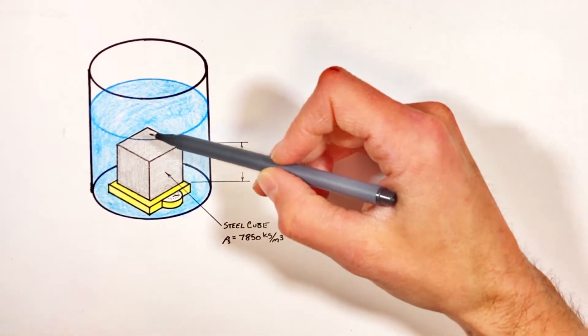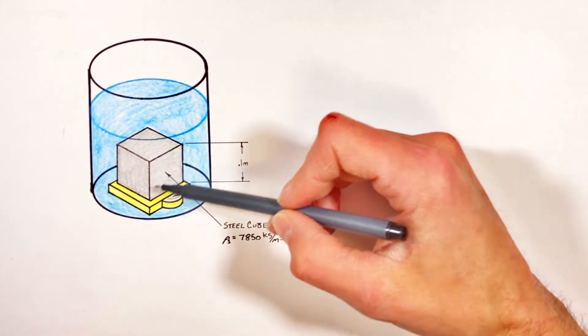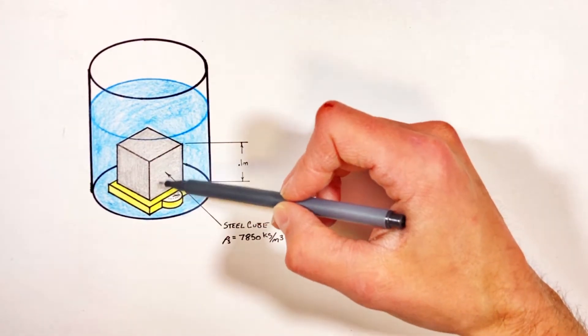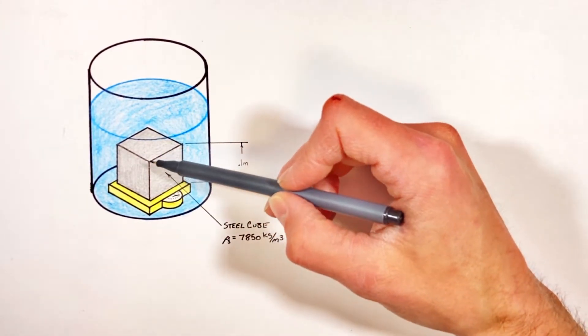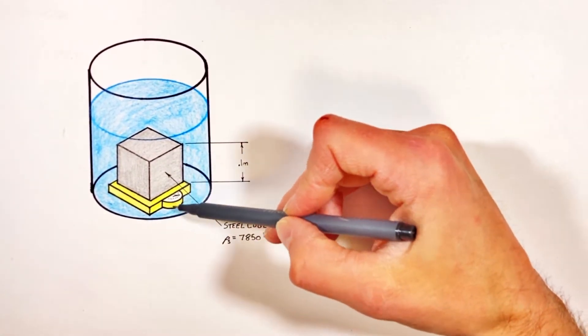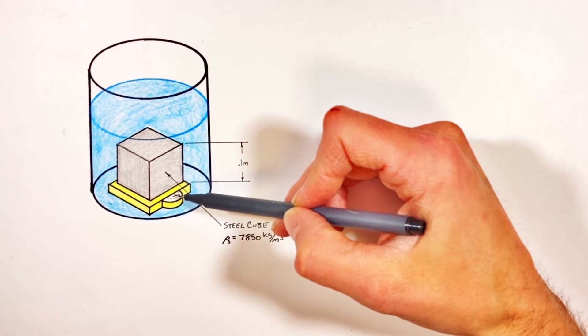Now if we were to stick something like a block of wood in this water, that block would float, but because this is steel it sinks. But I want you to realize even though it's sinking to the bottom of the water, there's still a buoyant force on it and that's going to affect the reading of the scale.